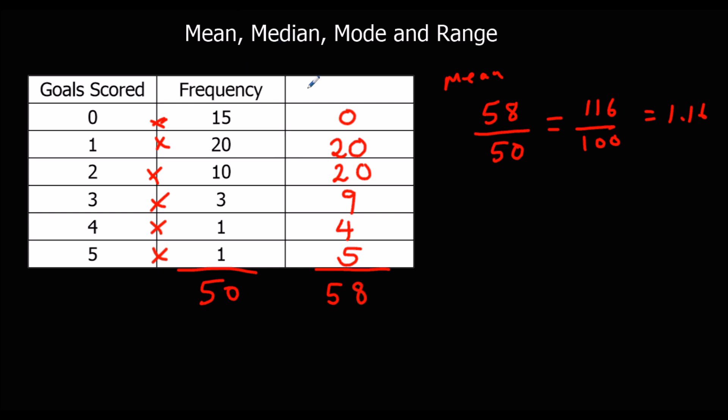The median is the middle number. So if there are 50 numbers, we're going to look for the 25th number. So there's 15 zeros, and then the 25th number is going to be in this section. So the median number is going to be 1.